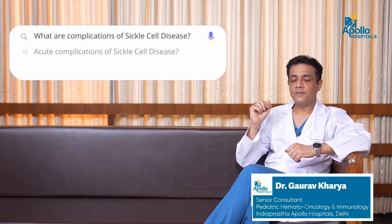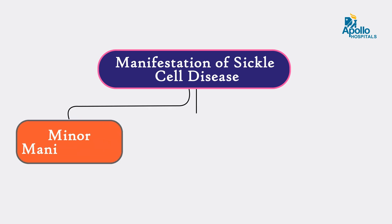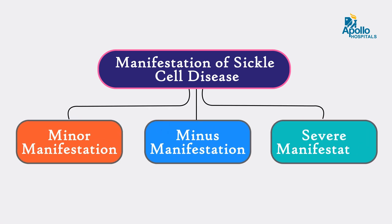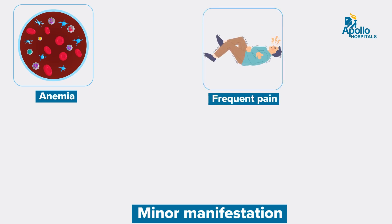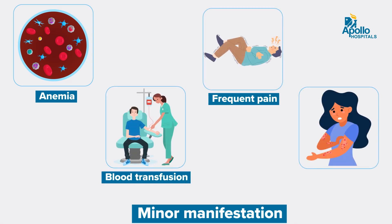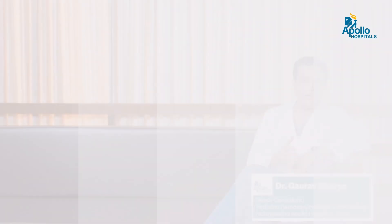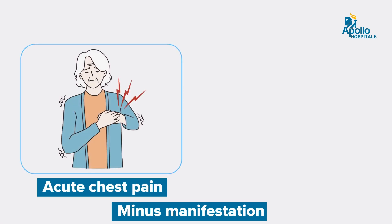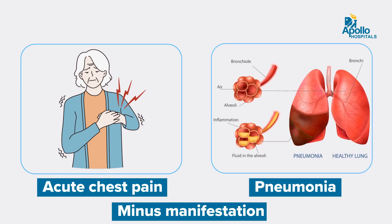The complications of sickle cell disease can be varied. It can affect any part of the body from top to bottom. We divide these into minor and severe clinical manifestations. Minor manifestations include persistent anemia, frequent painful crisis, need for blood transfusions, and frequent infections — these are less complicated and non-life-threatening. On the other hand, there are extremely important life-threatening complications such as acute chest syndrome, where the patient presents with symptoms of pneumonia — a very significant condition which, if not treated properly, can be life-threatening.